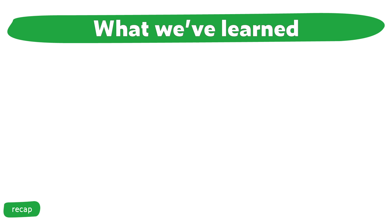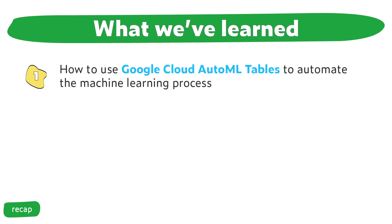Combining everything we've covered in this video along with the material available on the Kaggle Intro to Machine Learning AutoML module, the big recap is that we learned how to use Google Cloud's AutoML Tables to automate the machine learning process. And with that, we did it. Take a deep breath, take a moment to congratulate yourself — we've just completed all of the content in the Intro to Machine Learning series and the AutoML bonus lesson. I'm so excited to hear about what you're learning next.